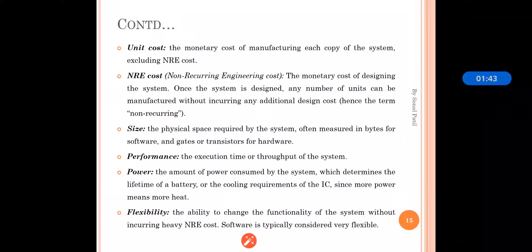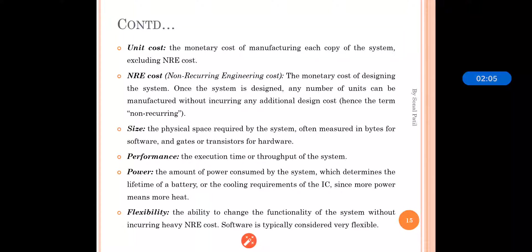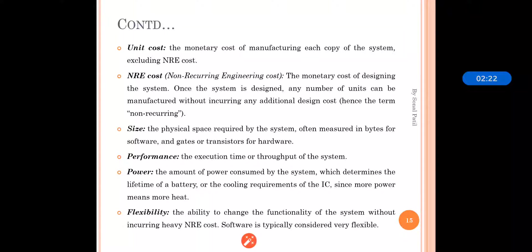Unit cost is the monetary cost of manufacturing each copy of the system, excluding the NRE cost. Our system is built from various modules, and the cost of each copy we manufacture is the unit cost. It does not include the NRE cost.